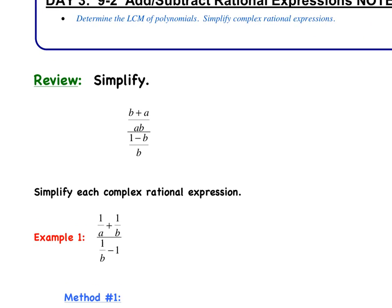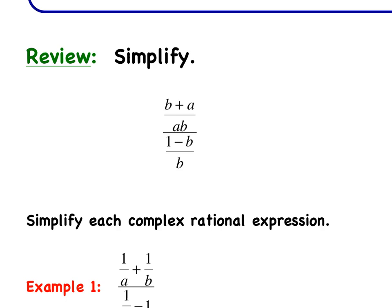Let's go ahead and review this first one. We've got (B plus A) over AB divided by (1 minus B) over B. So if you remember what we did yesterday or the day before, we rewrote this problem as (B plus A) over AB divided by (1 minus B) over B.